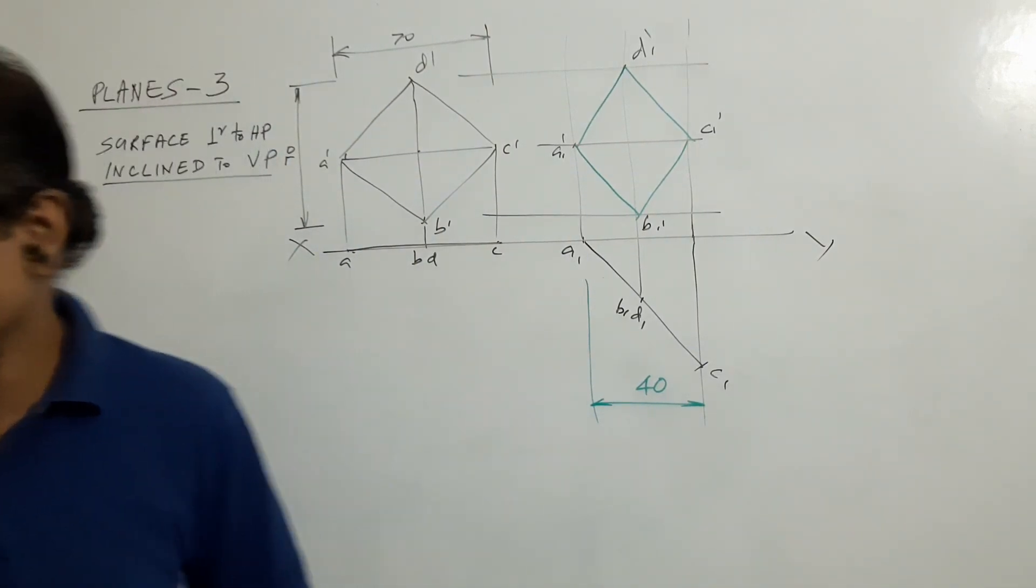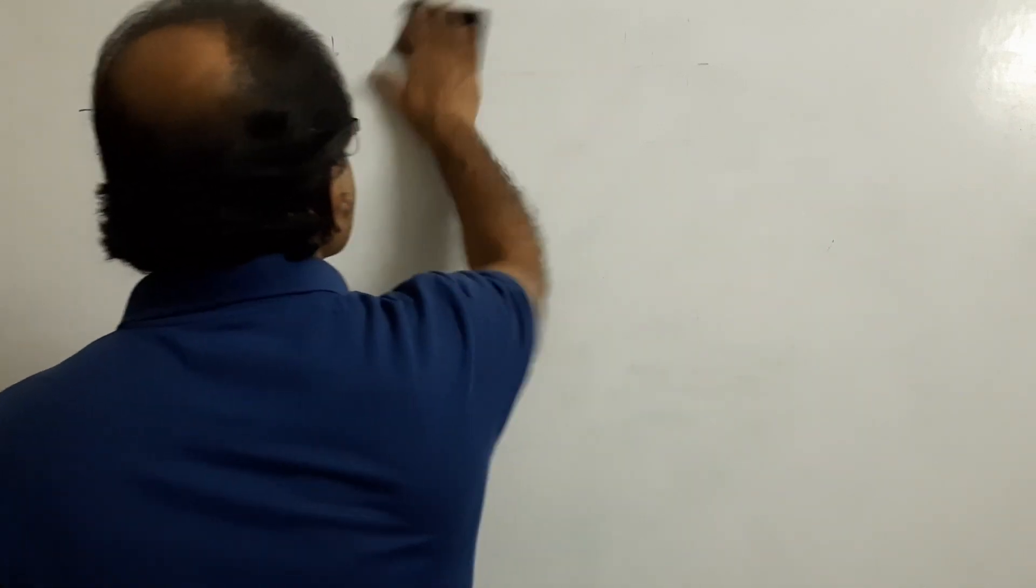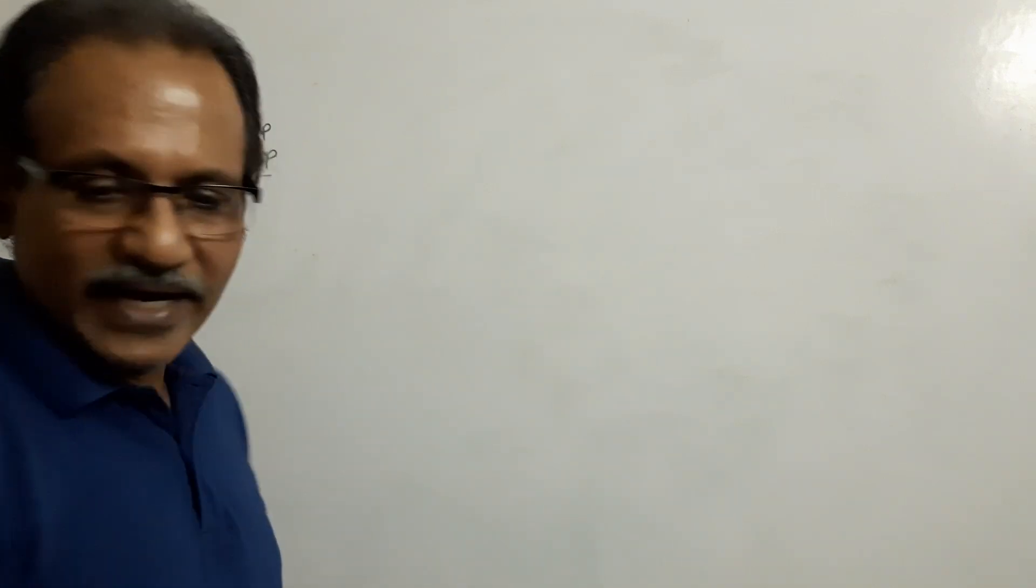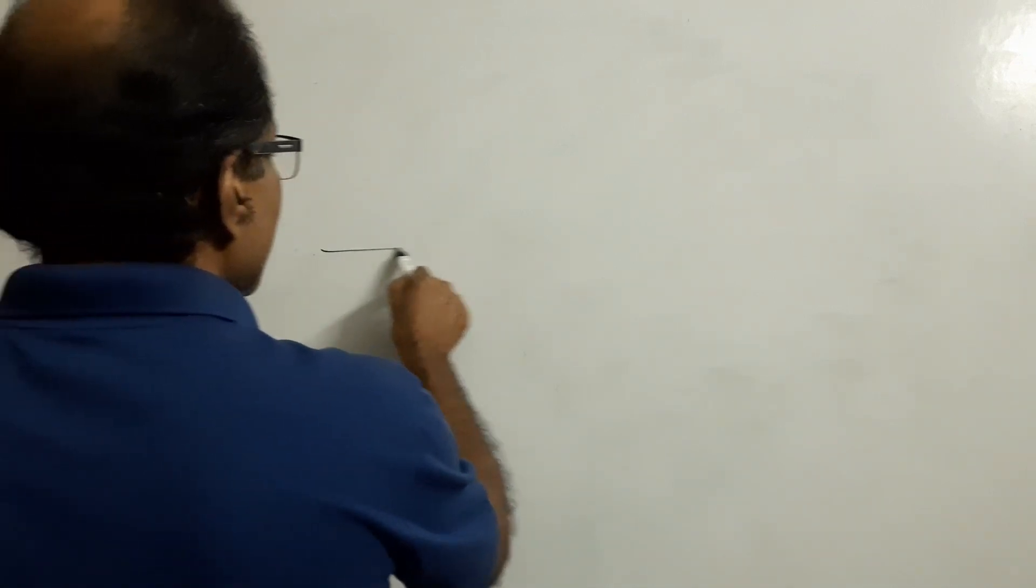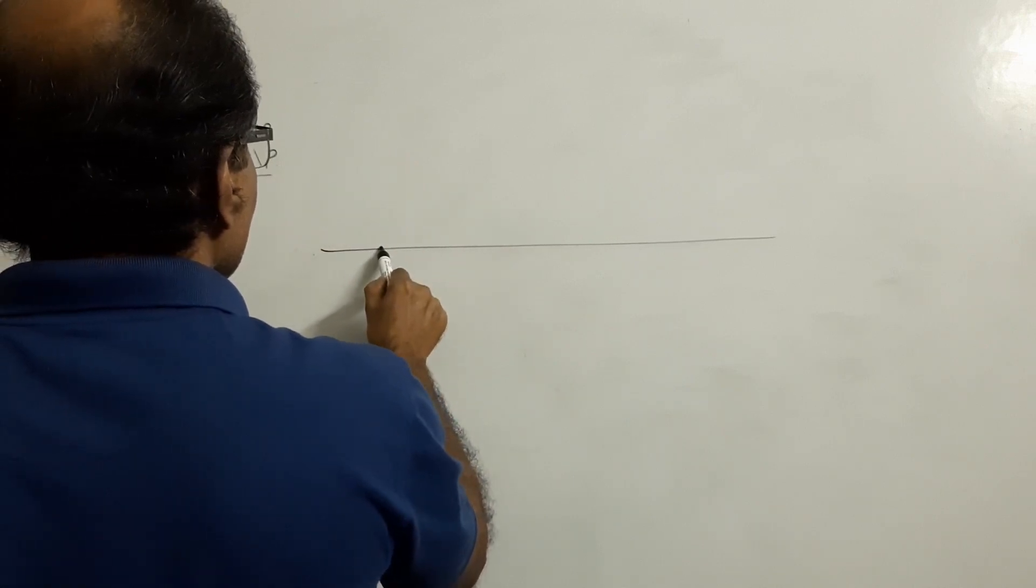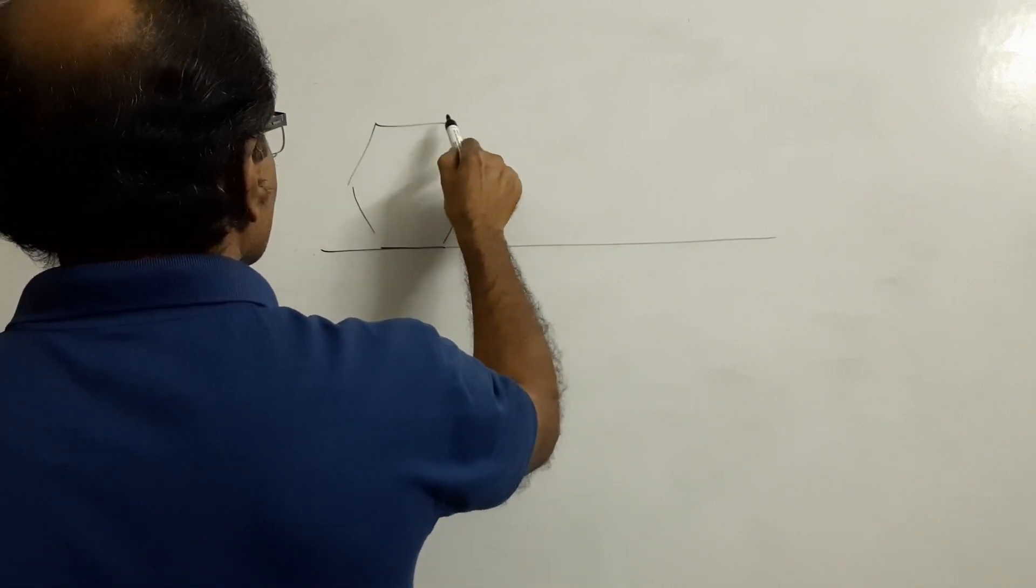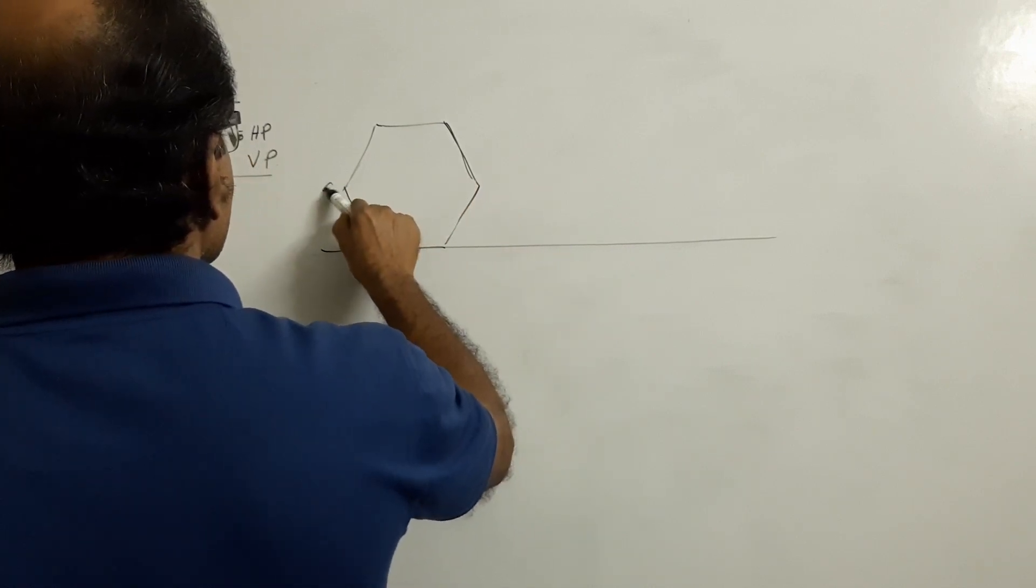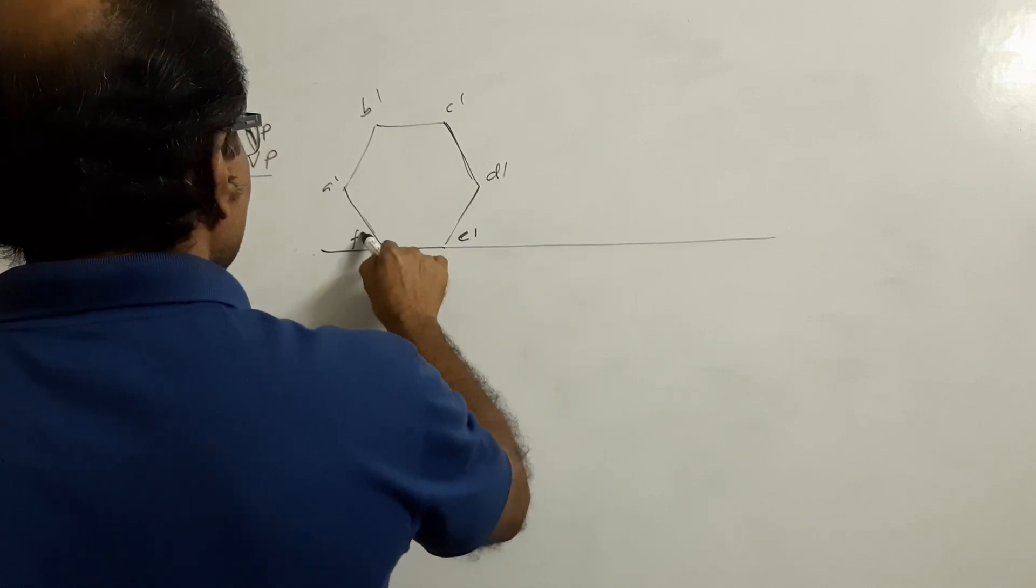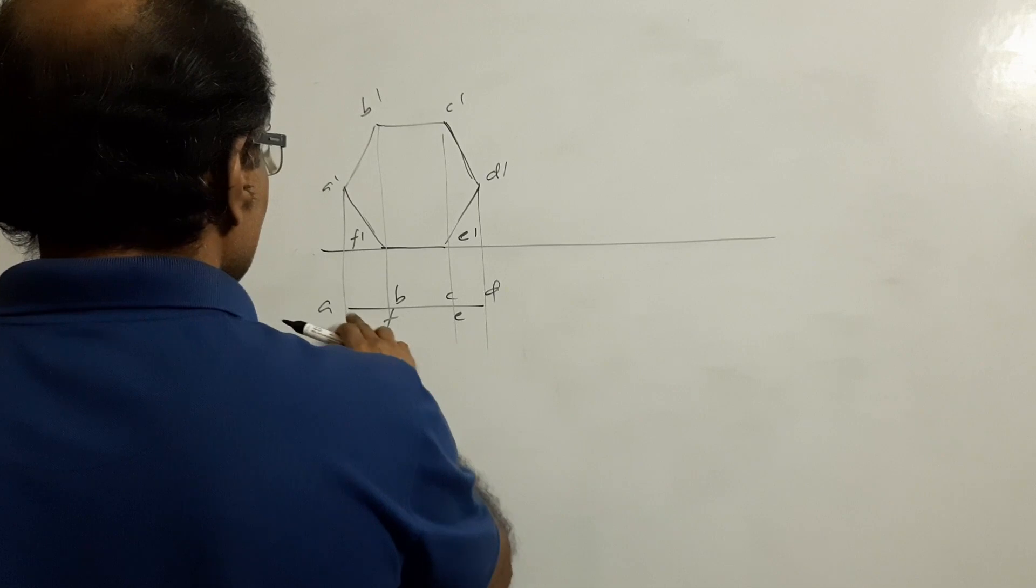Okay. In the third problem, we will draw a hexagonal lamina. In this, a hexagonal lamina is resting on VP on a side. Hexagonal lamina is resting on VP on a side with the surface vertical and making some angle to BP. What angle to BP? Let us consider 50 degrees to BP. Draw a hexagonal. A dash, B dash, C dash, D dash, E dash, F dash. A, B, C, D, E, F.